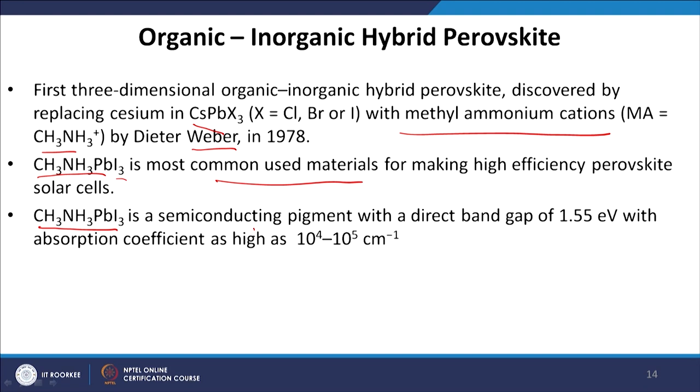CH3NH3PbI3 is a semiconducting pigment with a direct band gap of 1.55 electron volt. It is a light-absorbing material with an absorption coefficient as high as 10^4 to 10^5 per centimeter, which is almost comparable to inorganic materials. Because of this high absorption coefficient, light absorption can happen even in a smaller thickness. We do not need a micron-sized thick film like an inorganic semiconductor to make a suitable device from this material.